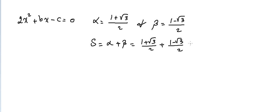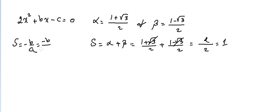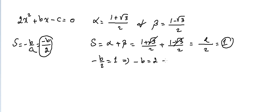The sum is alpha plus beta, which equals (1 + √3)/2 plus (1 − √3)/2. Same denominator, so we add numerators: 1 plus 1 equals 2, giving 2 over 2 which equals 1. The sum equals minus B over A, and A is 2, so minus B over 2 equals 1. Cross-multiplying gives minus B equals 2, so B equals minus 2.